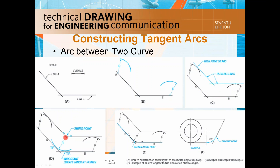At this new swing point, you're going to swing one radius arc within line A and line B, at the tangent point and tangent point, and now you have created a new arc.